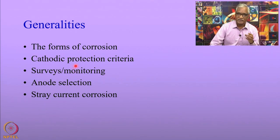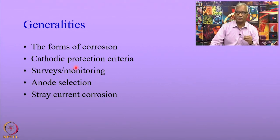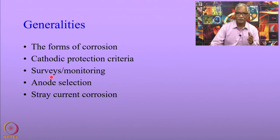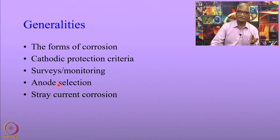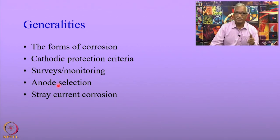The cathodic protection criteria applicable to pipelines are equally applicable to storage tanks. The surveys related to soil resistivity, pipe-to-soil potential, current requirement, and stray current corrosion are all applicable to storage tanks. The anode selection criteria and the way you calculate ground bed resistance are very similar to what is done for pipelines.